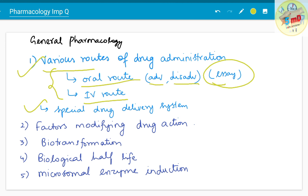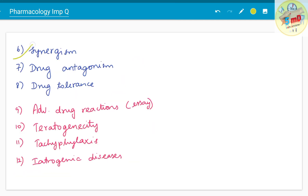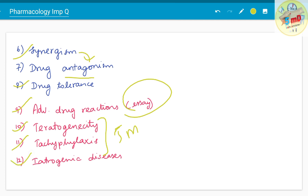You should also know about factors modifying drug action, biotransformation and its applications, biological half-life, microsomal enzyme induction, synergism, antagonism, drug tolerance, adverse drug reactions — which can be asked as an essay — teratogenicity, tachyphylaxis as a 5-mark or short notes question, and iatrogenic diseases.